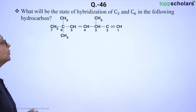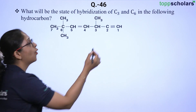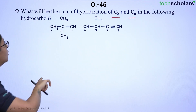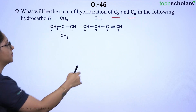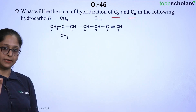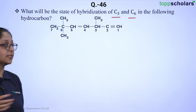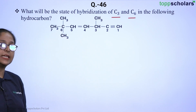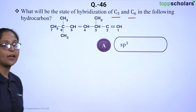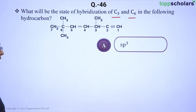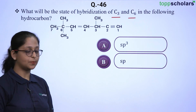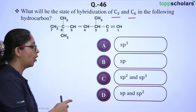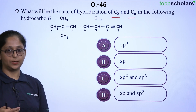The question is: what will be the state of hybridization of carbon 3 and carbon 6 in the following hydrocarbon structure? We have to determine the hybridization at the third and sixth positions. The four options are: A is SP³, B is SP, C is SP² and SP³, and D is SP and SP².